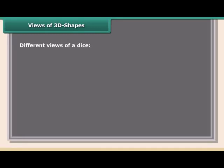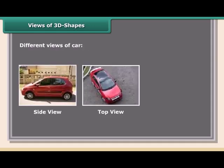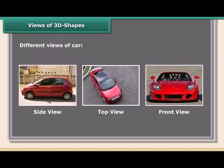Different objects can be viewed from multiple perspectives. For example, a dice has a side view, top view, and front view. Similarly, a car also has a side view, top view, and front view.